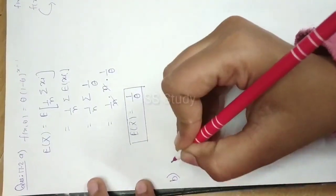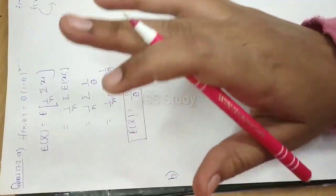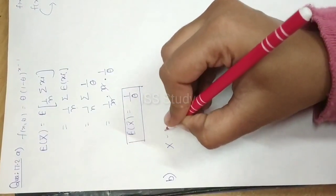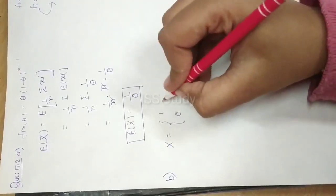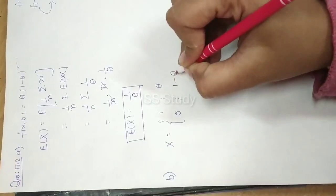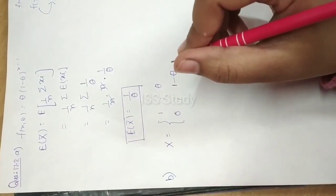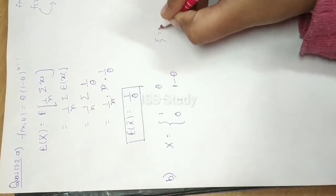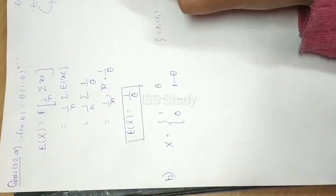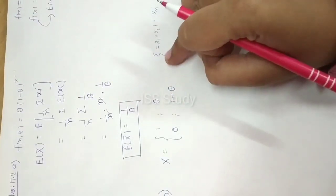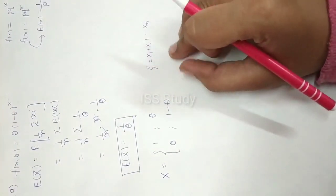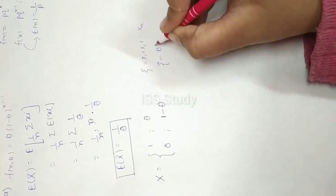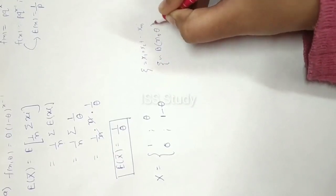Now we will do Part B, which is very easy. A random variable x takes values 0 and 1 with respective probabilities theta and 1 minus theta. This is a form of Bernoulli distribution. There are independent observations x1, x2, ..., xn. The sum x1 plus x2 plus up to xn follows the binomial distribution, because the sum of Bernoulli distributions follows a binomial distribution. So this sum follows binomial distribution with parameters n and theta.